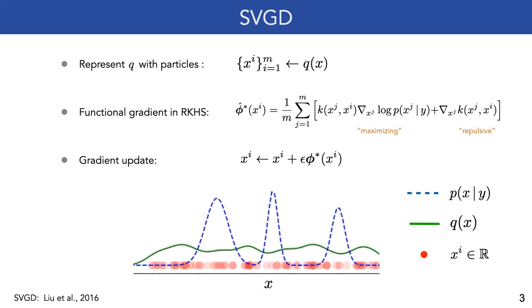To model the target posterior distribution, we leverage Stein Variational Gradient Descent, or SVGD, a recent non-parametric inference algorithm. Here, the proposal distribution is represented using a set of particles over the parameter space.